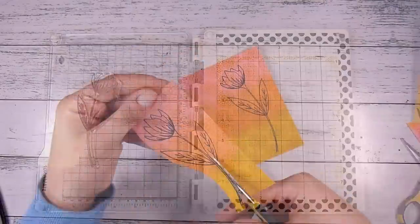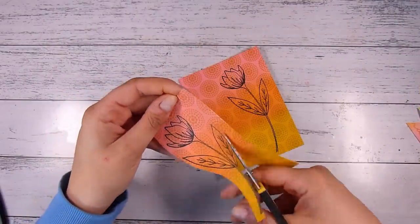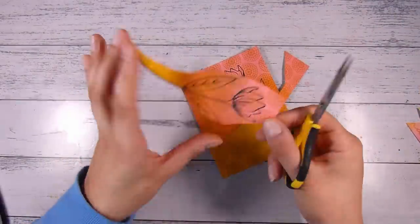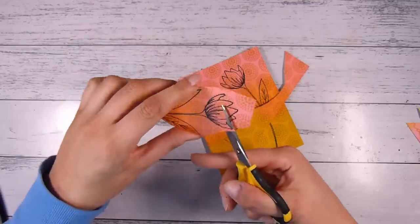So then I'm going to fussy cut out this one. If you were uncomfortable fussy cutting out the stem, I would just do the flower head and the big gorgeous leaves, and it would look really good nonetheless.